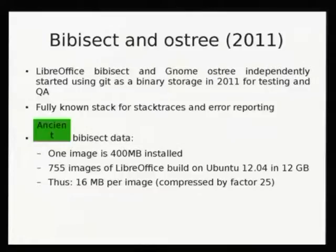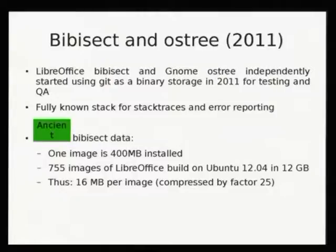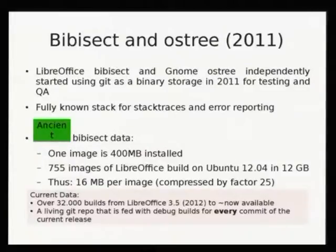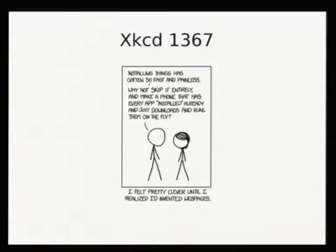So, like I said, in 2011 I did Bivisect and started off with this. OSTree was something similar at GNOME, but that was the starting point for LibreOffice. I could put 755 images of LibreOffice into just one repository of 12 gigabytes, which was a good starting point — that means about 16 megabytes per installation. But you still had to download the whole thing to really get started. That data is actually about half a year old, so just skip over that.